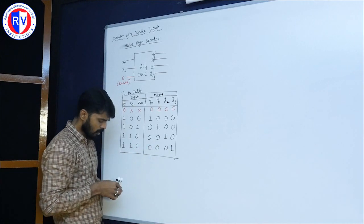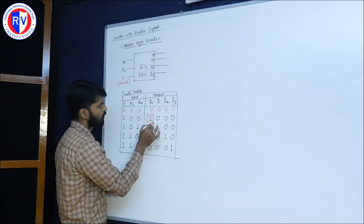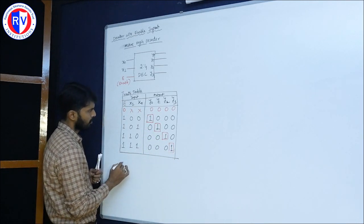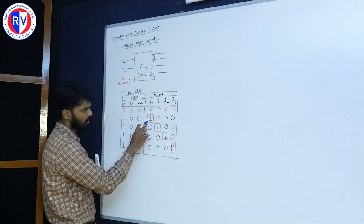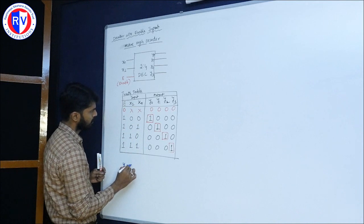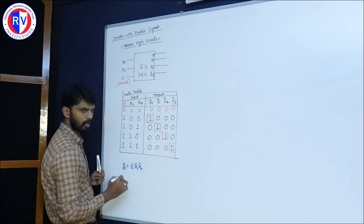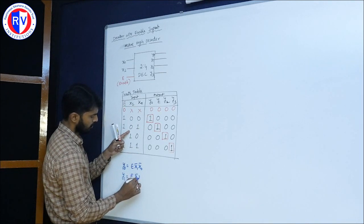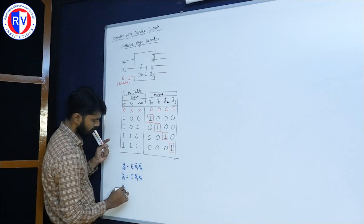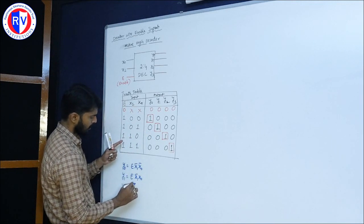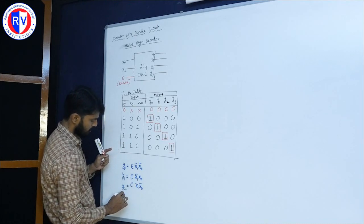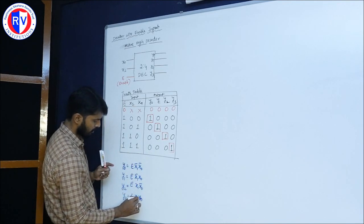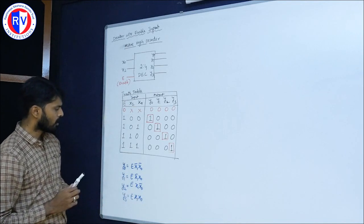For this truth table we need to write the equations. The area of interest is only where the output is 1. So: y0 = E · x1_bar · x0_bar, y1 = E · x1_bar · x0, y2 = E · x1 · x0_bar, and y3 = E · x1 · x0. This is the equation. For this equation we need to construct a logic diagram, and in each case enable is associated.